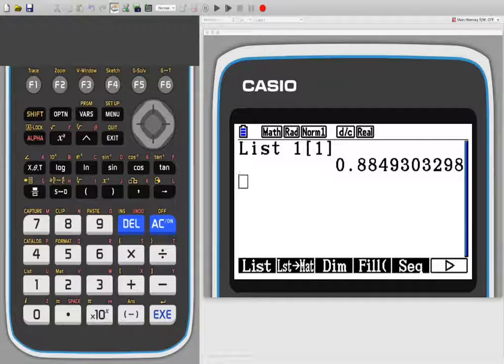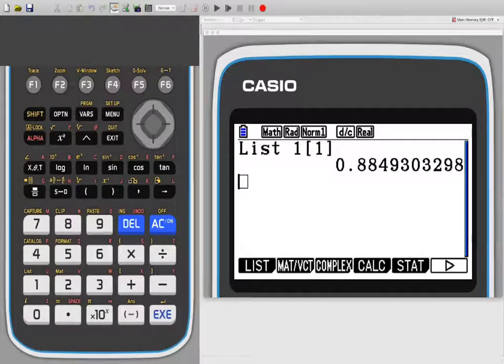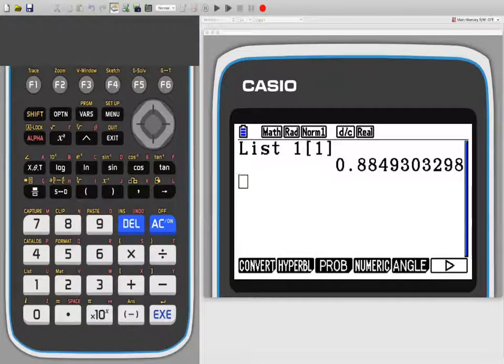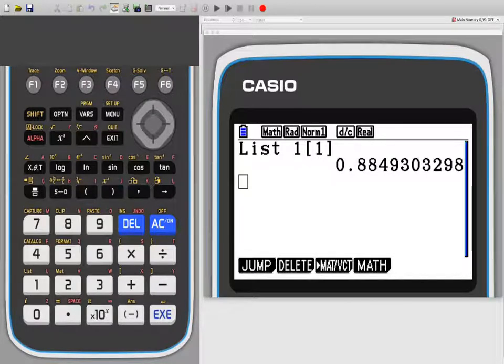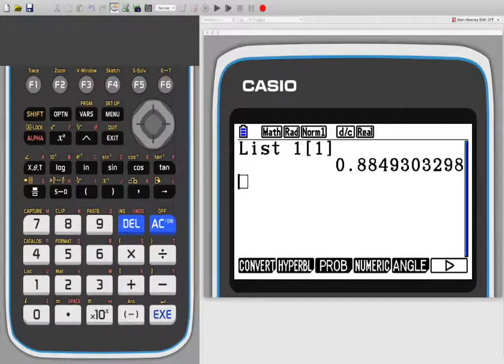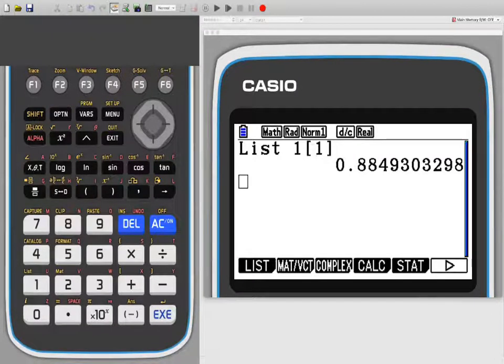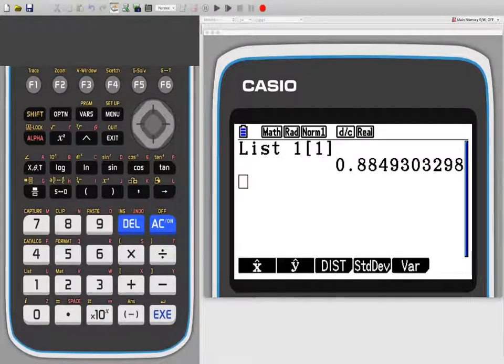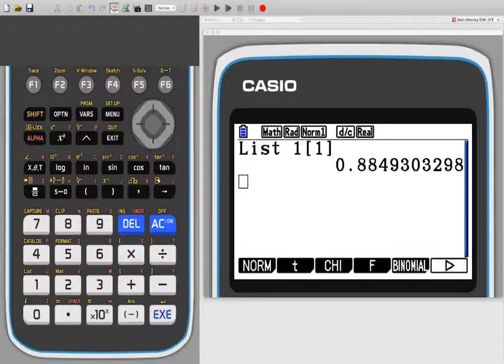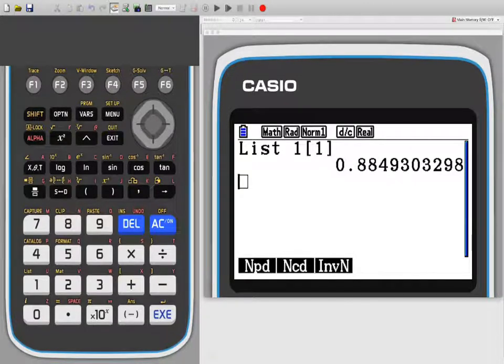You can also do normal distribution in the run menu. So if you press option and then F6. Option again. Press option distribution. Stat, it was F5. And then distribution, which is F3. I want normal, which is F1. And I want NCD.